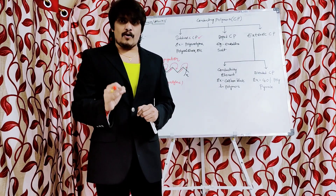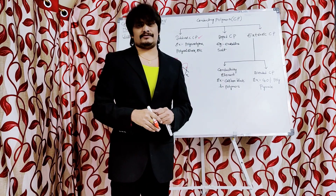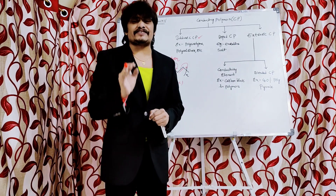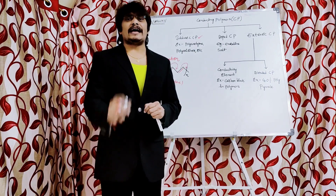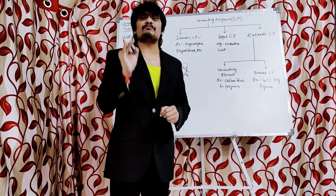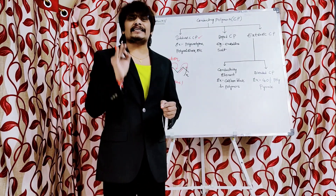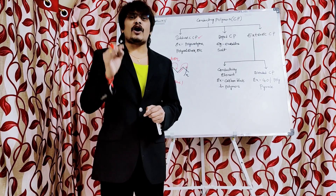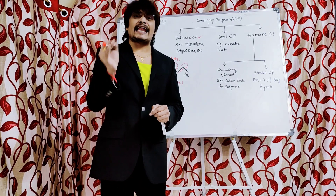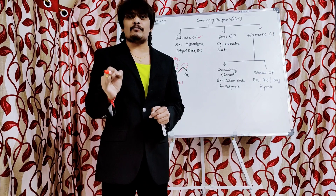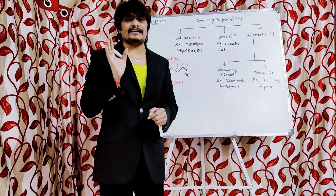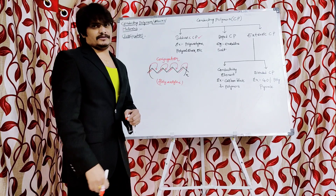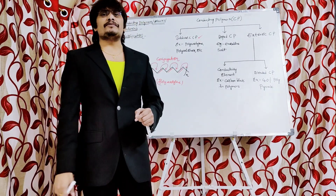So, intrinsic conducting polymers are the polymers which conduct electricity with their internal structure, especially due to their conjugation. An example of an intrinsic conducting polymer is polyacetylene. I will explain the conductivity of conducting polymers in detail in the upcoming videos.